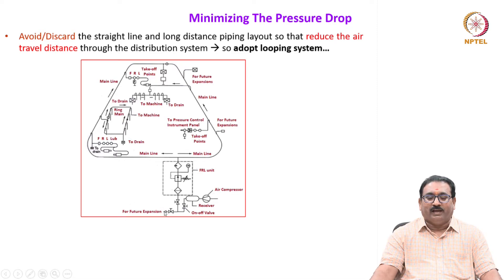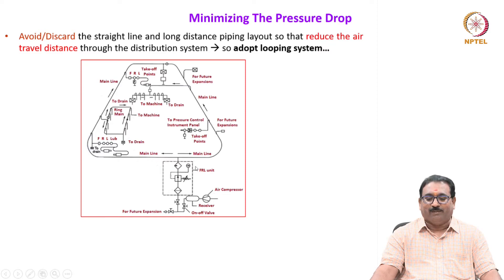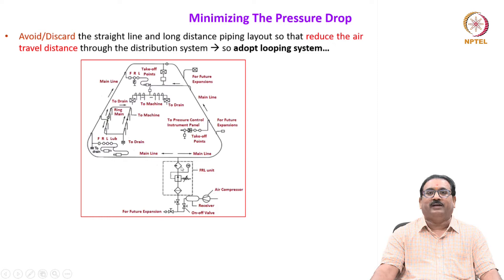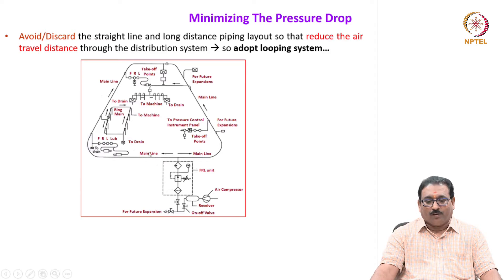Also provide air tapping for future expansion. After the receiver tank, before going to the main line, air will be subjected to secondary air treatment — filter, regulator, lubricator units. Then air will pass to the ring main system, where the air moves through the main line clockwise and anti-clockwise. Then air is tapped to the various stations where the pneumatic devices consume the air.